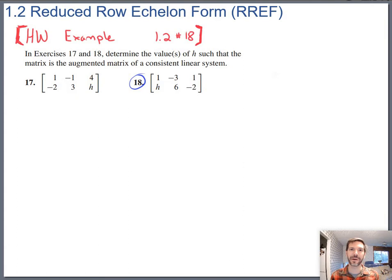So let's take a look at what's going on in 17 and 18. They say in 17 and 18 determine the value or values of H such that the matrix is an augmented matrix of a consistent linear system. So keep in mind what consistent means. Consistent just means at least one solution.